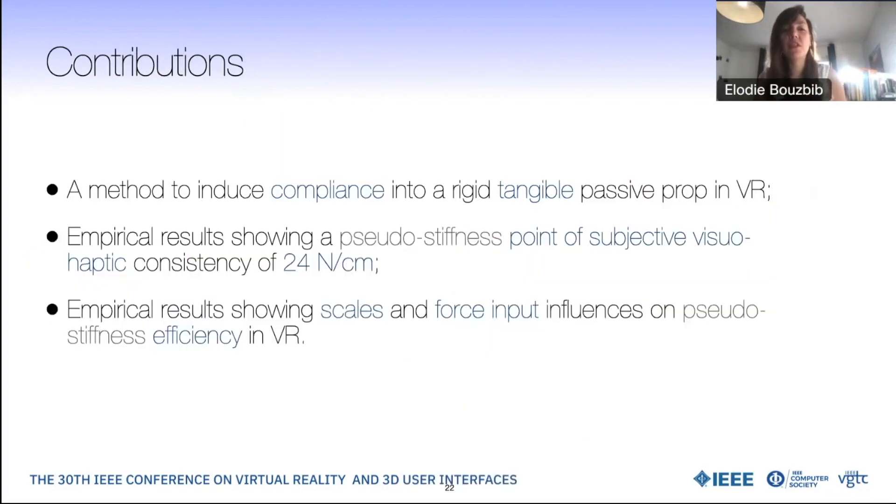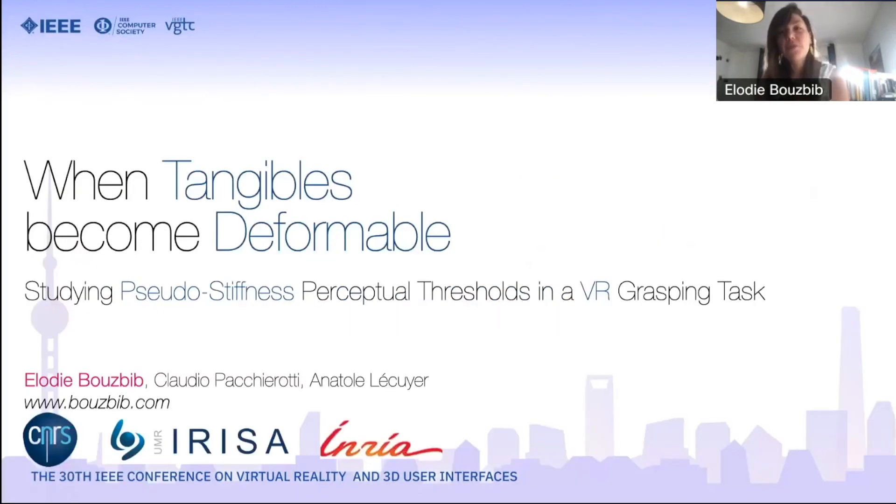The contributions of this work are a method to induce compliance into a tangible passive prop in VR, empirical results showing pseudo stiffness point of subjective visual haptic consistency of 24 newton per centimeter, like gummy bears and raisins, and empirical results showing scales and force input influences on pseudo stiffness efficiency in VR. Thank you for your attention.